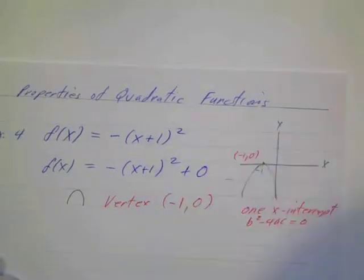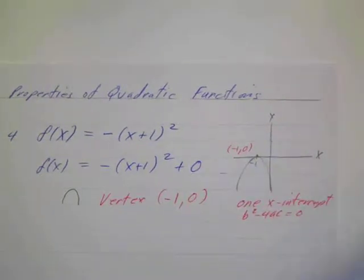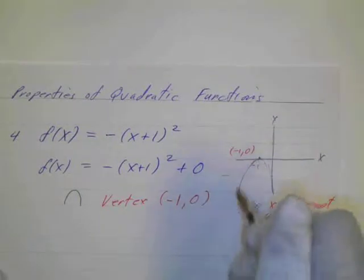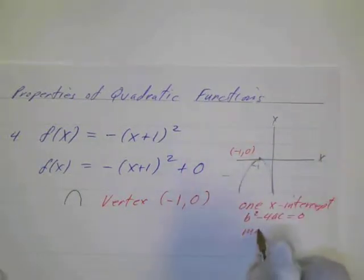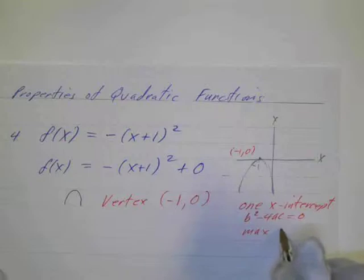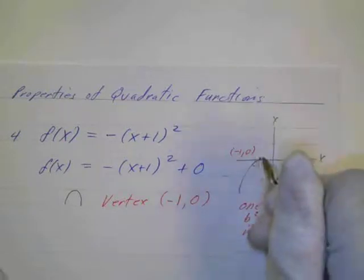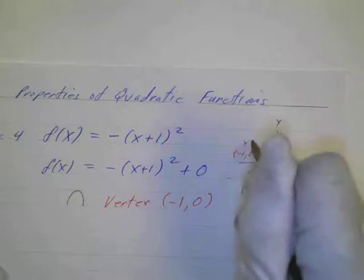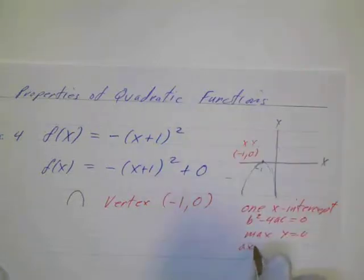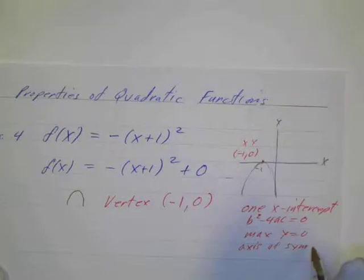And it looks again, it's going to have a maximum value. You can see it's going to go up and up and up and stop. So it will have a maximum value, maximum. And that maximum value will be y equals 0. It's only going to go up to 0 and back down. And the axis of symmetry is just the x value, x equals negative 1.